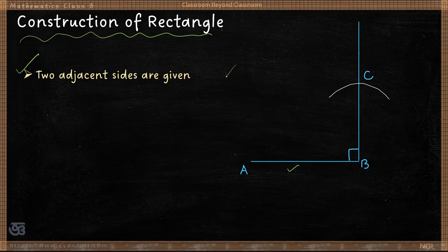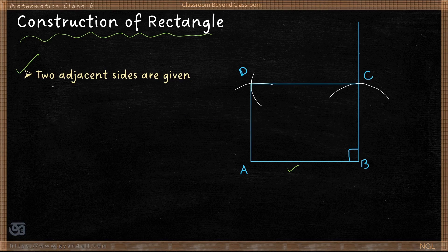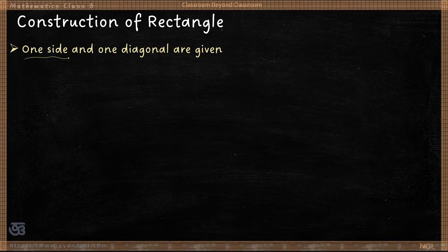Once we get point C, from point C we can draw an arc to locate point D. Similarly, from point A you can draw another arc equal to BC, and that way we will get point D. Once you get point D, you can join points D-A and D-C. This is how we construct a rectangle when two adjacent sides are given.